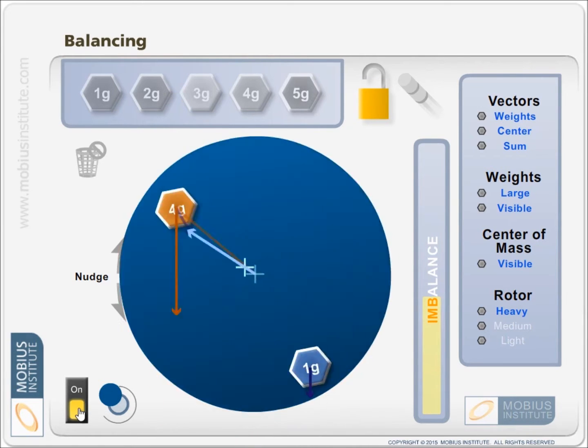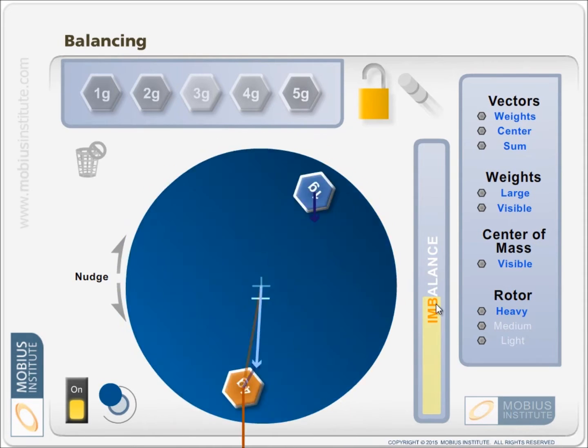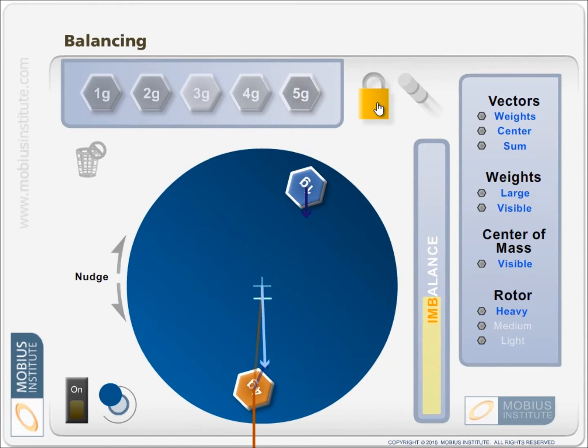But what we actually do is we run the machine and we measure the vibration and we see the amplitude has reduced but we also measure the phase. And knowing the new phase angle we can compute with vectors, and I will show you that in just a moment. We can compute that what we should have done is placed a weight obviously directly opposite where this one is.